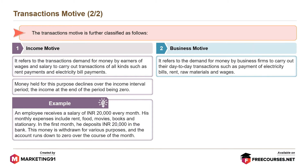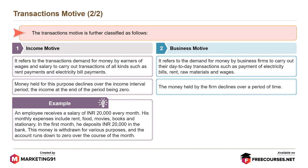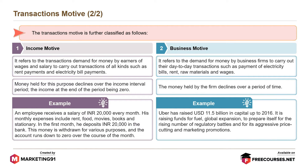Business motive refers to the demand for money by business firms to carry out their day-to-day transactions, such as payment of electricity bills, rent, raw materials, and wages. The money held by the firm declines over a period of time. For example, Uber has raised USD 11.5 billion in capital up to 2016, raising funds for global expansion, regulatory battles, and aggressive price-cutting and marketing promotions.